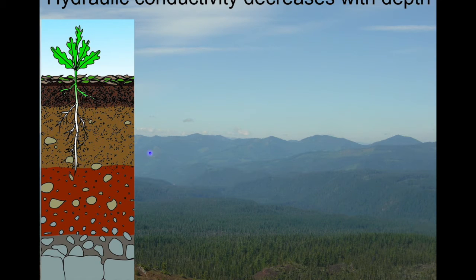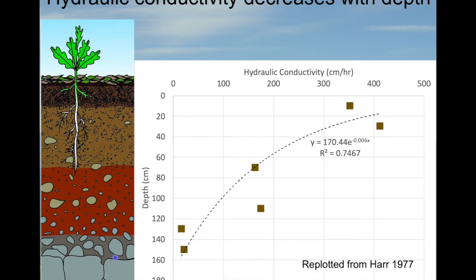Preferential flow paths tend to occur more near the soil surface as well as at the bedrock interface. In general, as we move down into soil, we see an increase in bulk density and a decrease in hydraulic conductivity. This is illustrated with classic data from a hillslope in western Oregon, where measurements of hydraulic conductivity were made at several depths, showing an exponential decline in hydraulic conductivity with depth. This pattern is commonly reported in forested landscapes all over the world.